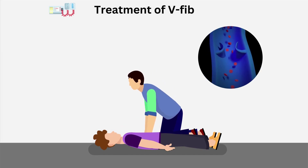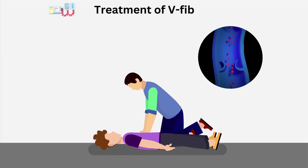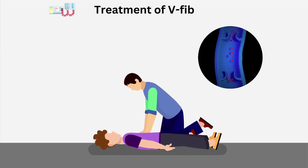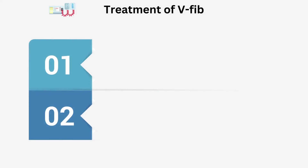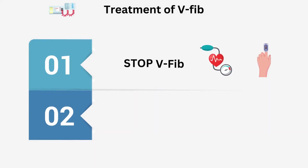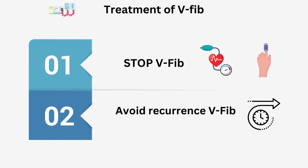Ventricular fibrillation requires emergency medical treatment to prevent sudden cardiac death. The goal of emergency treatment is to restore blood flow as quickly as possible to prevent organ and brain damage. There are two stages of treatment for V-Fib: the first tries to stop V-Fib immediately to restore blood pressure and pulse, and the second stage focuses on reducing the chances of developing V-Fib in the future.